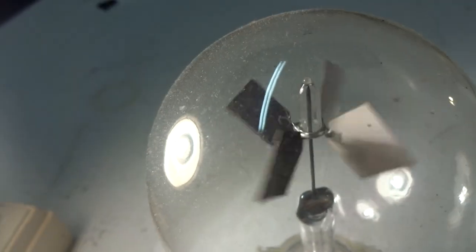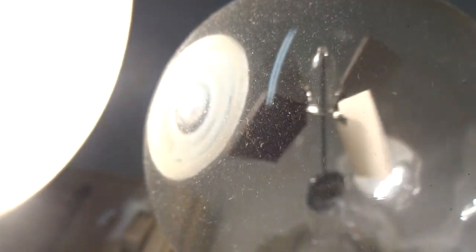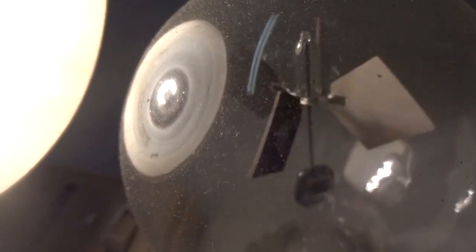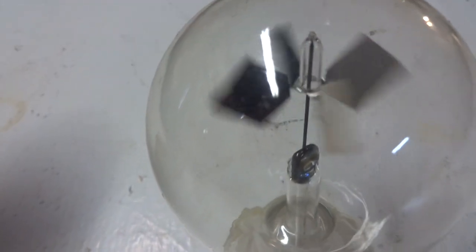I'll aim the light a little closer. Now we can see the radiometer is turning even faster. Now I'll turn the light source off, and we'll watch the radiometer slowly come to a stop.